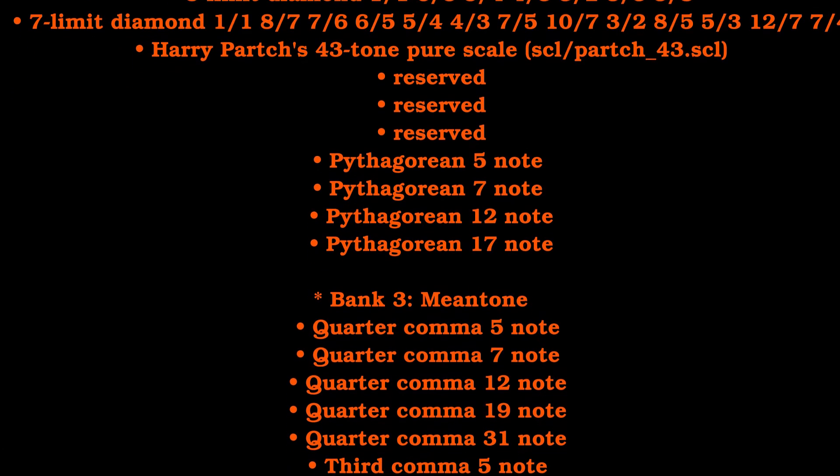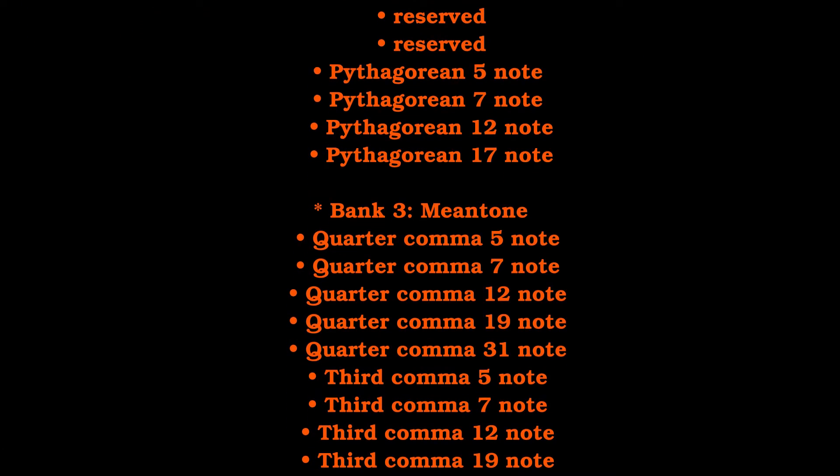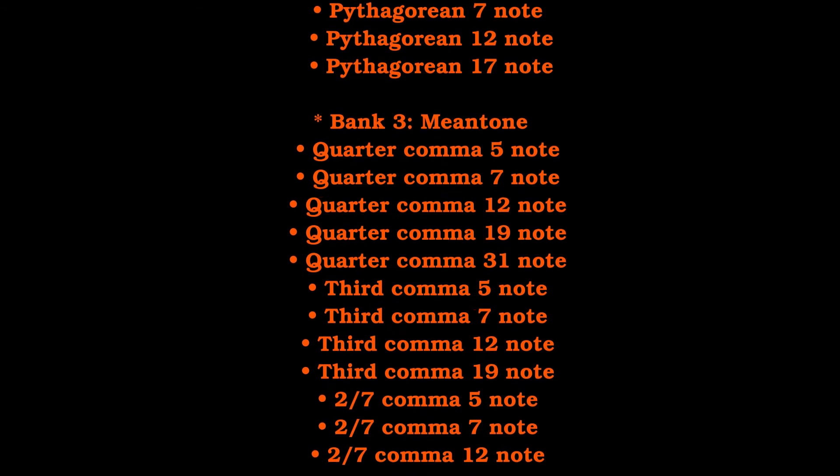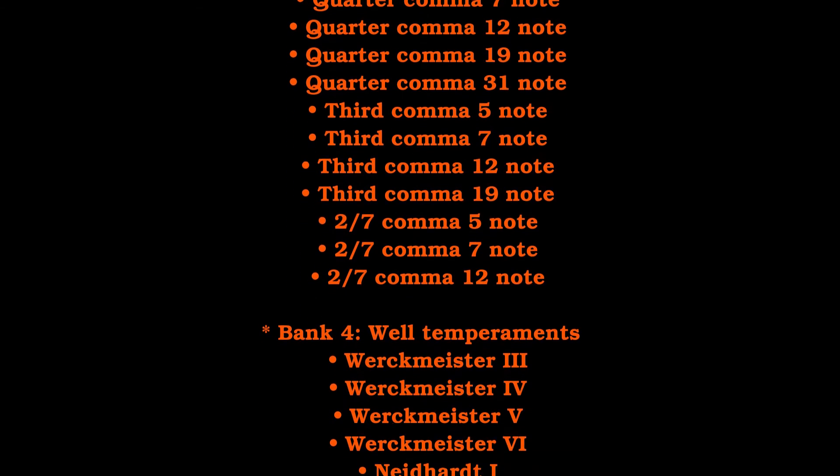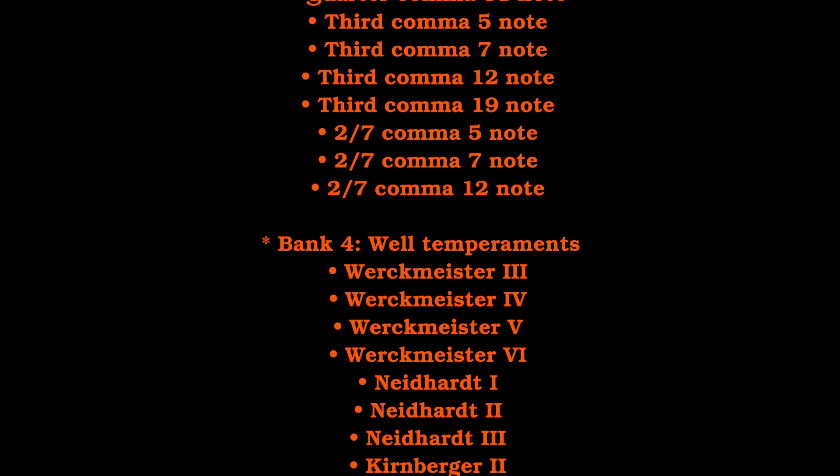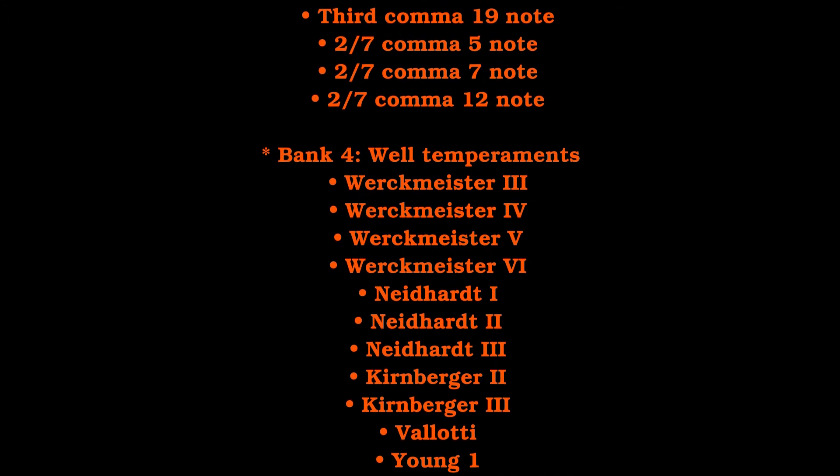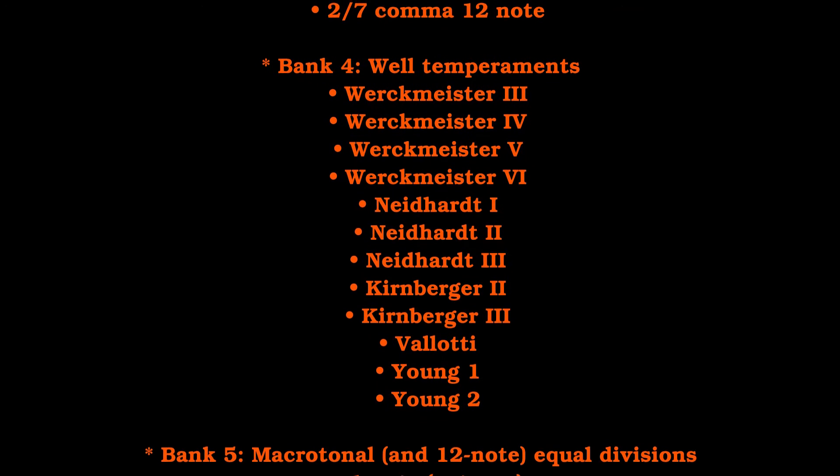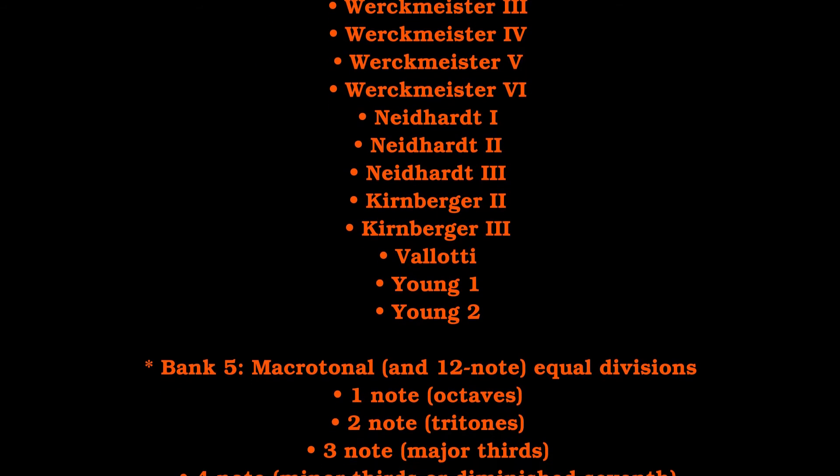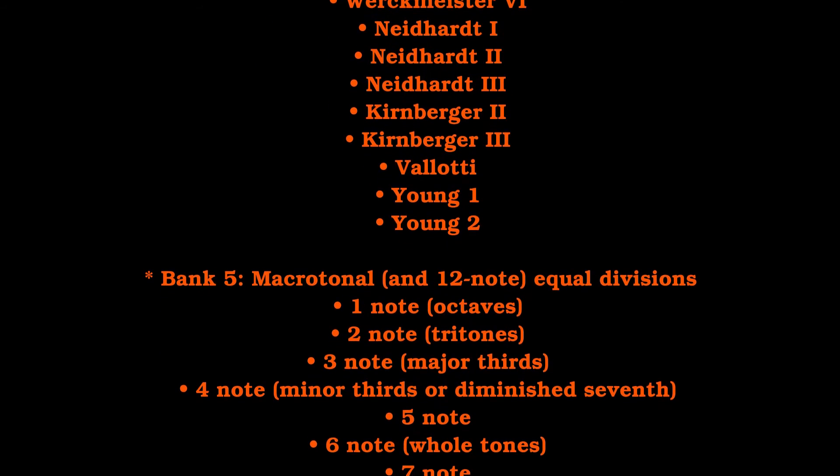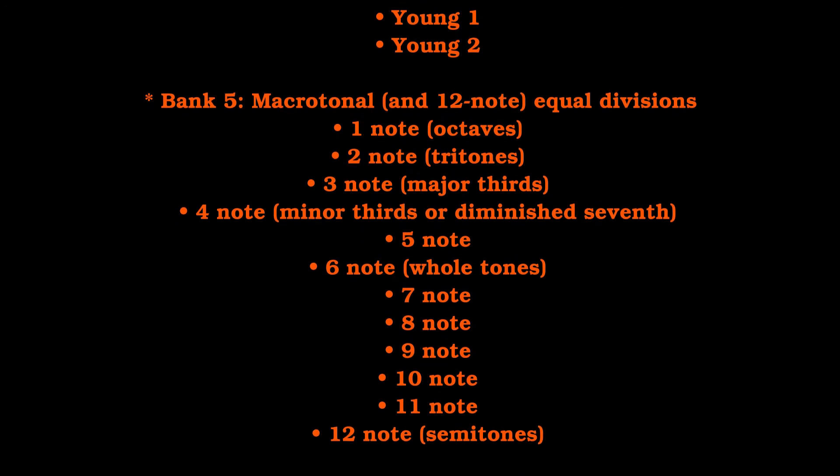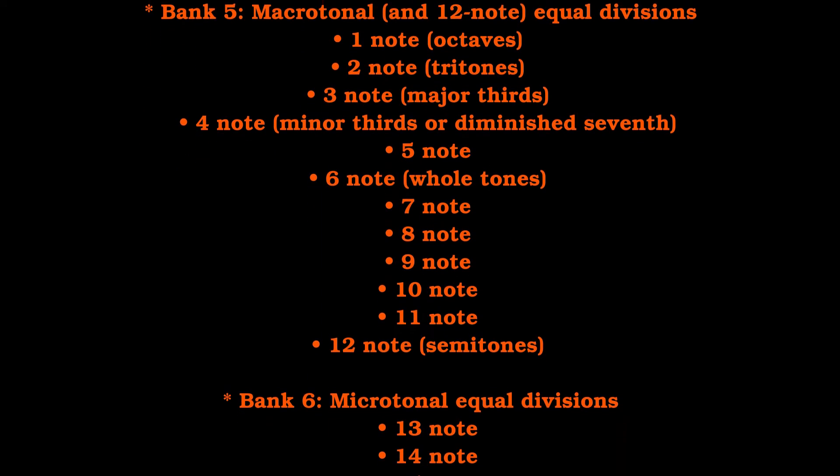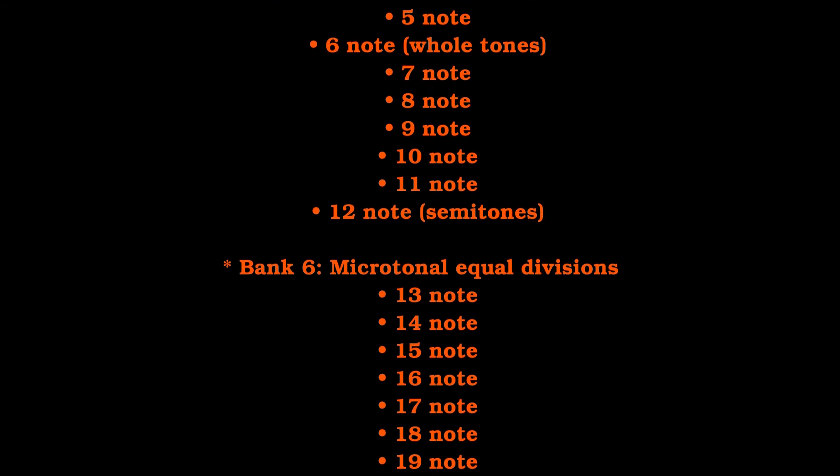But the second bank has various tunings such as, for instance, quarter comma meantone, various well temperaments, Pythagorean tuning, just intonation, various different equal divisions of the octave from anywhere from one note to the octave, which means it just gives you octaves, to 24 notes to the octave, which means it gives you quarter tones, and so forth.